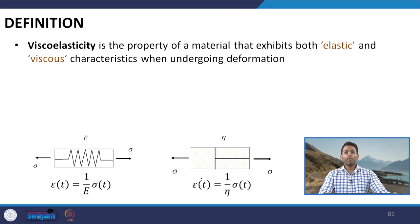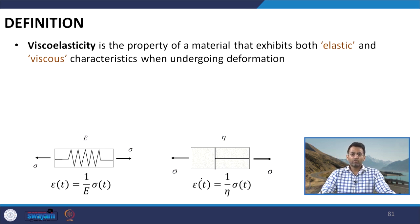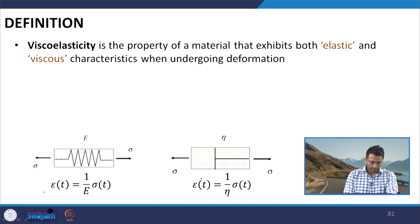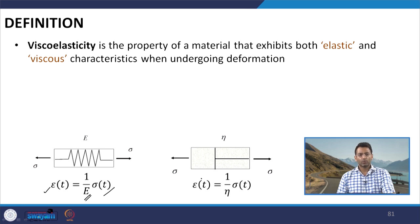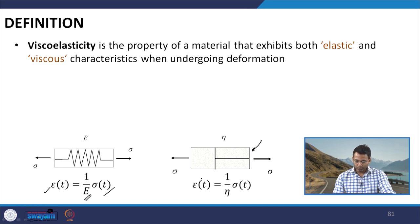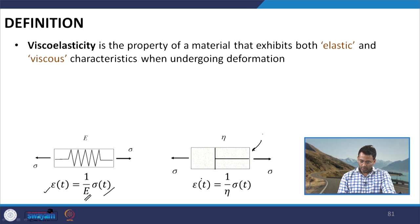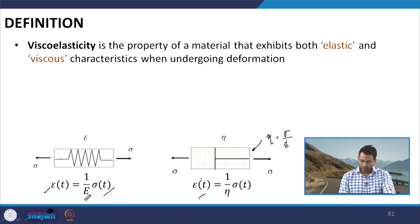To understand this, let us imagine a spring system which is a representation of an elastic system. If we consider a Hookean solid, the constitutive equation for a spring system is epsilon(t) = (1/E) × sigma, where E is the elastic modulus. On the other hand, a viscous material such as a Newtonian fluid can be represented using a dashpot or damper. The constitutive equation for the dashpot is viscosity equal to the ratio of stress to rate of strain, so the strain rate equals (1/η) × sigma.